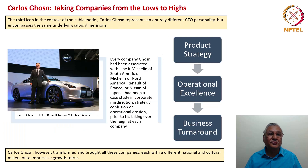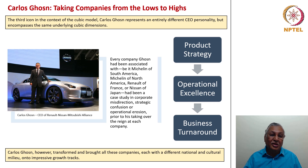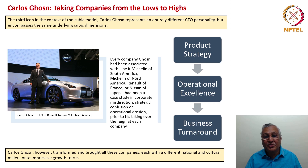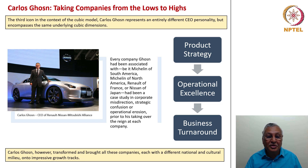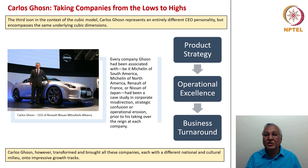Let us now look at Carlos Ghosn — he has a reputation of taking companies from lows to highs and is the third icon in our cubic model context. He does have the shadow of ethical performance towards the end of his career; keeping that aside, let us look at the good parts of his performance leadership. He represents an entirely different CEO personality but encompasses the same underlying cubic dimensions. Every company Ghosn was associated with — Michelin of South America, Michelin of North America, Renault of France or Nissan of Japan — had been a case study in corporate misdirection, strategic confusion or operational erosion prior to his arrival. He single-handedly transformed all these companies, each with a different national and cultural milieu, onto impressive growth tracks.